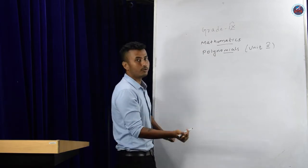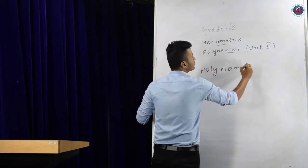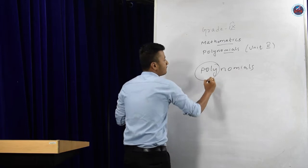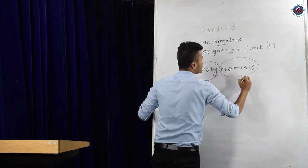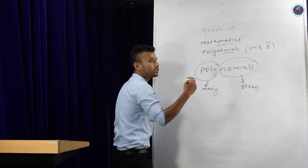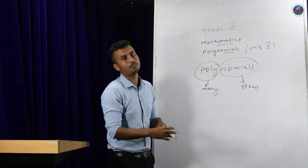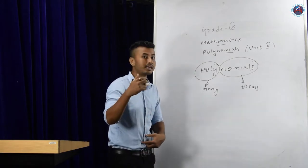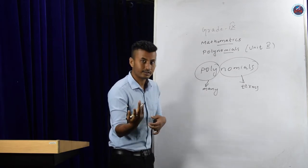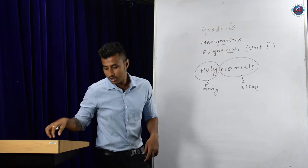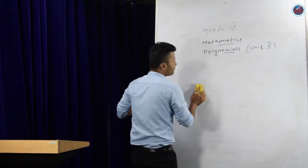So what is a polynomial? Polynomial refers to many terms. Such expressions which contain one or many terms are called polynomials. This might be confusing — what is the meaning of terms? What is the meaning of expression? Don't worry, I am going to clear it right now. I am going to start from the basics.